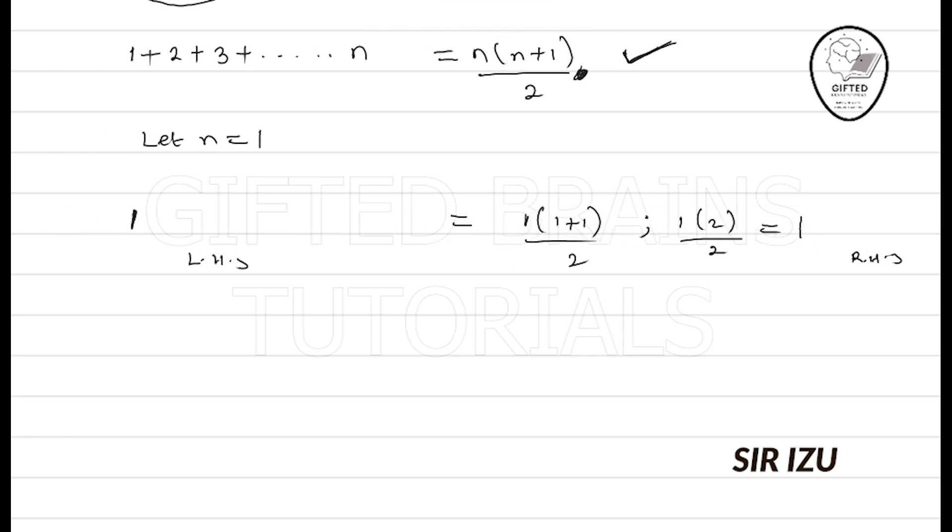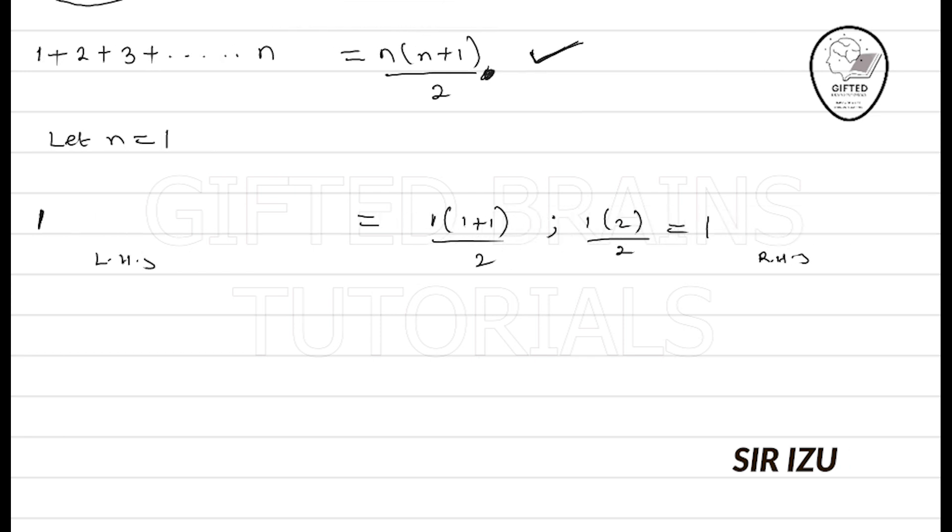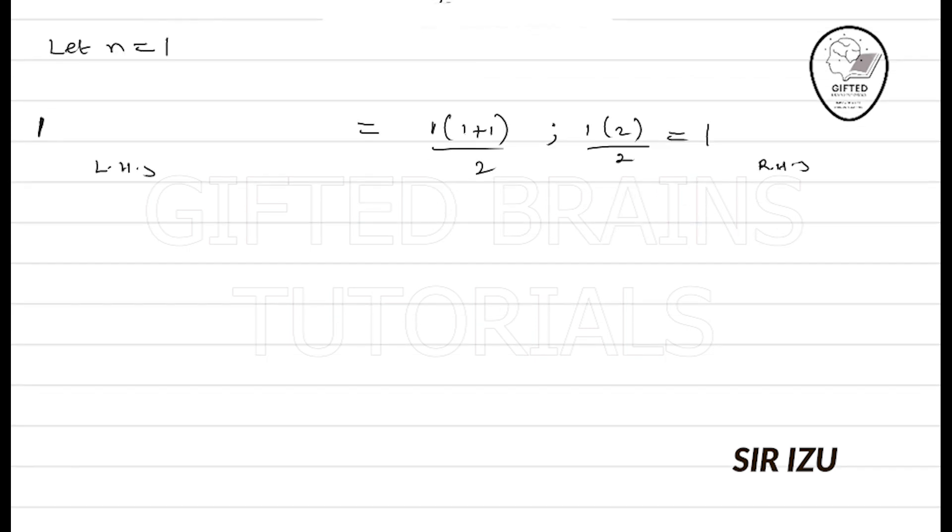For step 2, all you need to do is let n equal k. The question changes: you have 1 plus 2 plus 3 plus dot dot dot till k, and it equals k times k plus 1 over 2. Anywhere I see n, I put k.